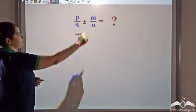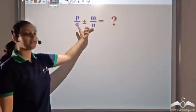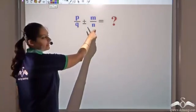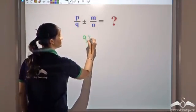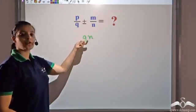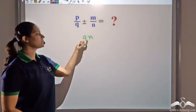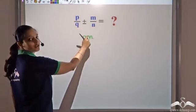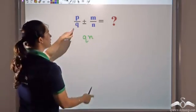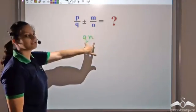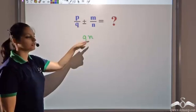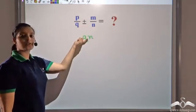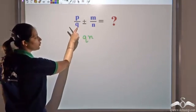Alternatively, given two rational numbers with different denominators, you can find a common multiple of both q and n, which is qn — it is n times q, a multiple of q, and also q times n, a multiple of n. So qn is a common multiple of both. Make the denominators equal to qn.